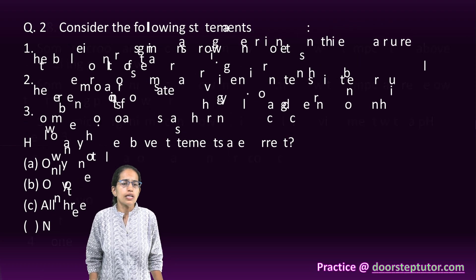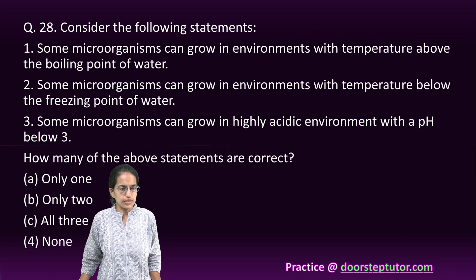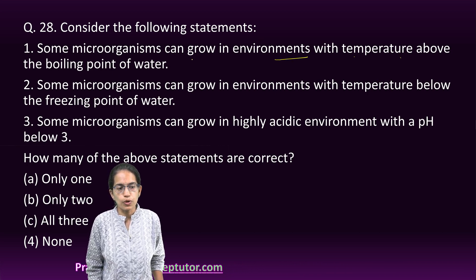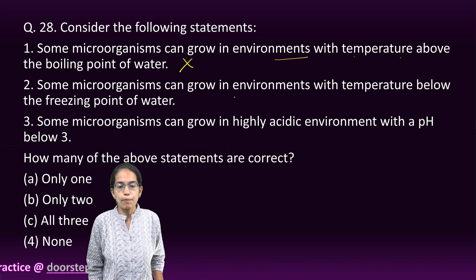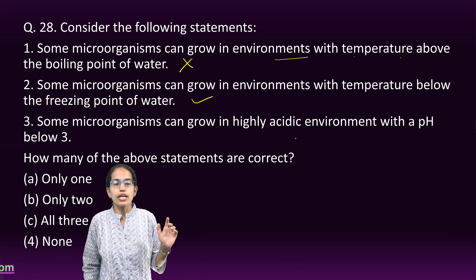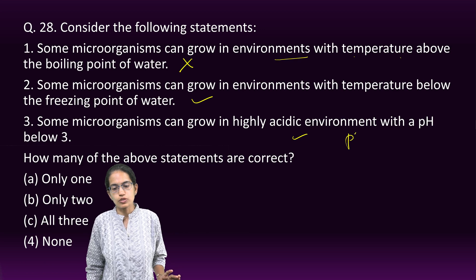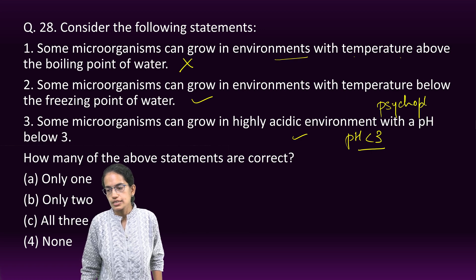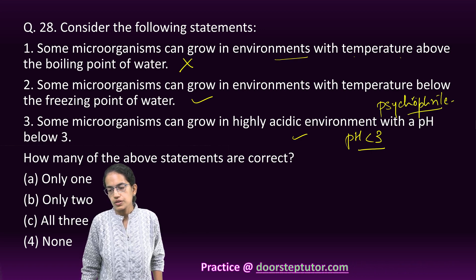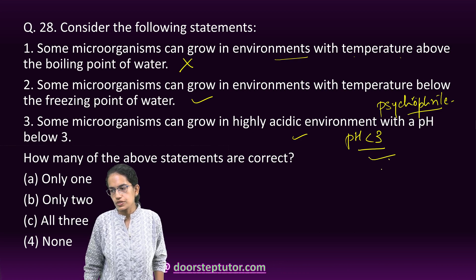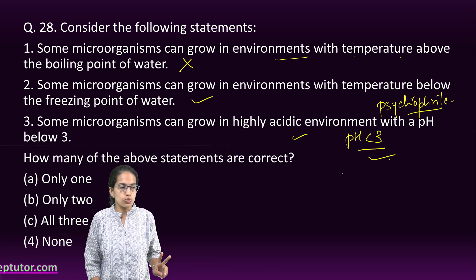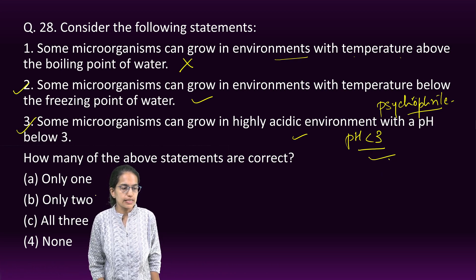The next question is about microorganisms. Some microorganisms can grow below freezing point — these are known as psychrophiles. Others can grow in a highly acidic atmosphere with pH less than 3. However, the statement that they can grow above the boiling point is incorrect. So statements 2 and 3 are correct, making only option 2 the answer.